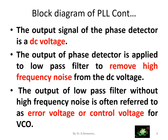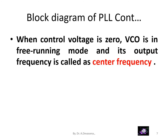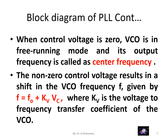The output of the low pass filter without high frequency noise is often referred to as error voltage or control voltage for VCO, that is voltage controlled oscillator. When the control voltage is zero, the VCO is in free running mode and its output frequency is called the center frequency. The non-zero control voltage results in a shift in the VCO frequency F, given by F = F₀ + Kᵥ·Vc, where Kᵥ is the voltage to frequency transfer coefficient of the VCO.